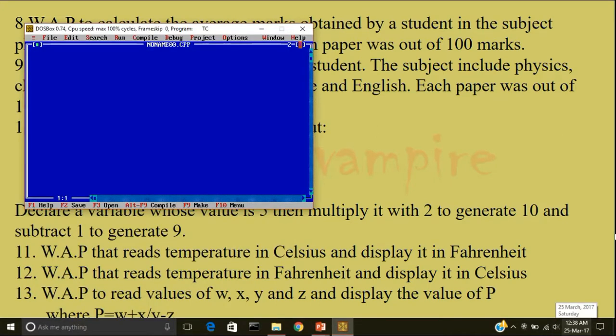I'll write the formula. F is equal to 9 C by 5 plus 32. The first step is to include the header file, hash include iostream.h, hash include conio.h, void main, parenthesis, open the curly brace, clear screen.